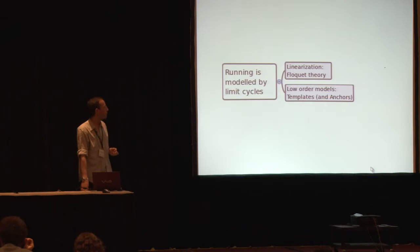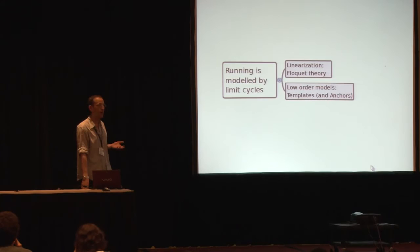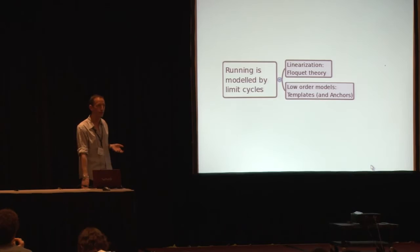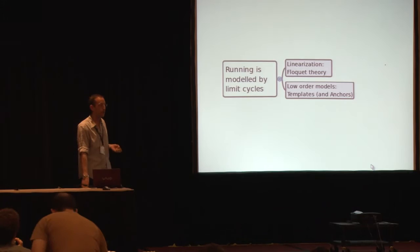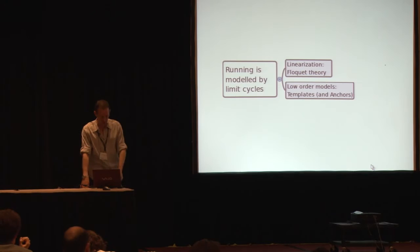So there's a fair consensus that one can use limit cycles as a model for running. And I'm going to be talking about a way of combining two types of models for what happens around such a limit cycle. One is very general models, Floquet theory, basically the first order of linearization around the limit cycle. And the other is the use of lower-order models, such as templates, so basically using lower-dimensional dynamical systems as models for gait dynamics.